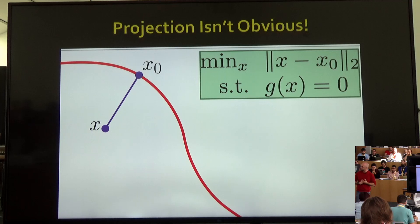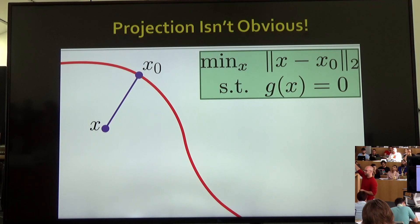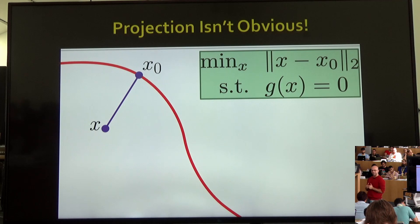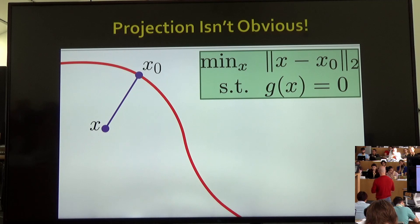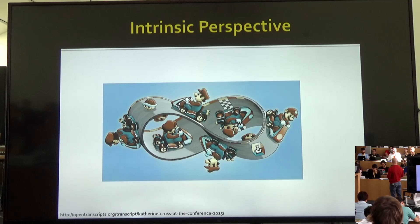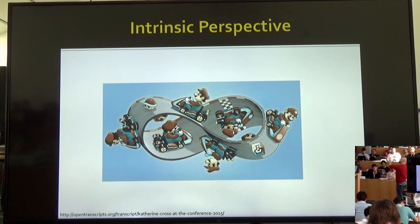Say we attach a bead to the red constraint curve and it just can't leave that curve. Can we write down an optimization algorithm that looks like gradient descent but simply doesn't know how to leave the constraints? That leads to manifold-valued optimization. The basic perspective: like Mario Kart driving along a crazy surface, he doesn't have the option of stepping into the blue sky — all he can do is drive around on that space. He can still do a notion of gradient descent.